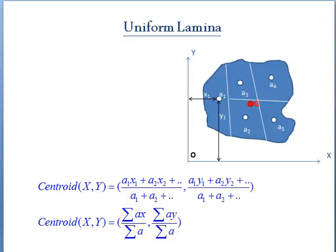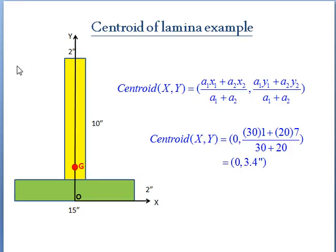We will understand this with a simple example. Consider a T-shaped lamina. So we can divide this lamina into two standard shapes of rectangle. So the first green shape lamina is having an area of 2 by 15 inch square.